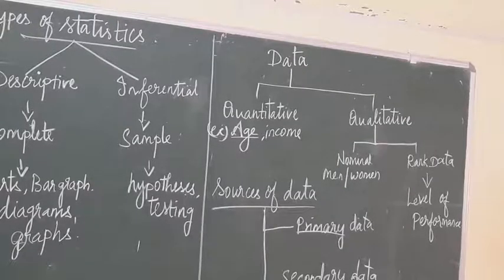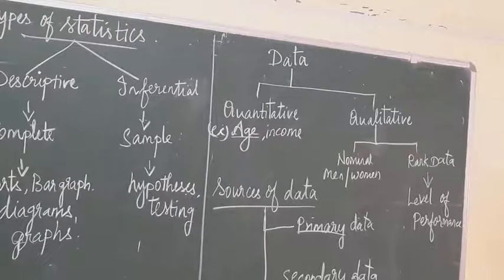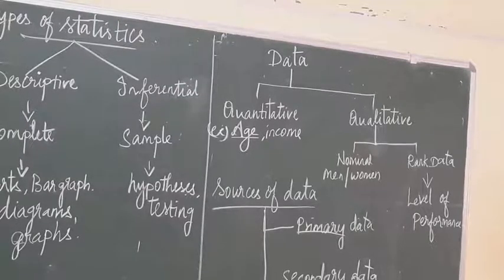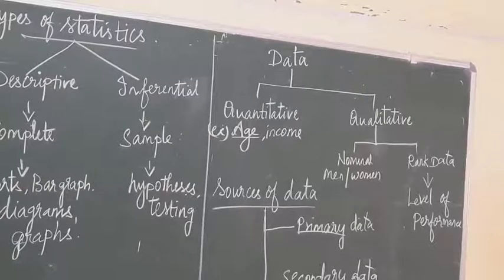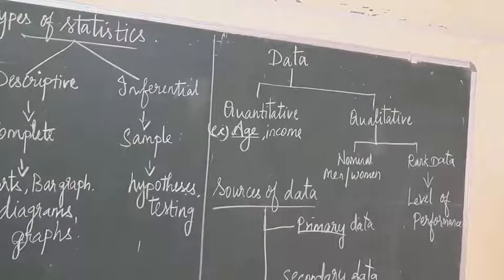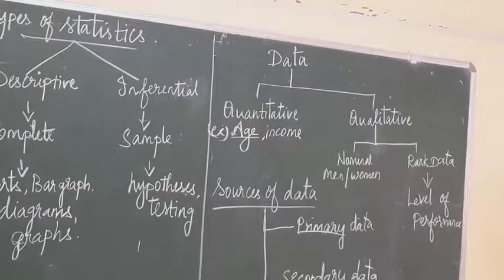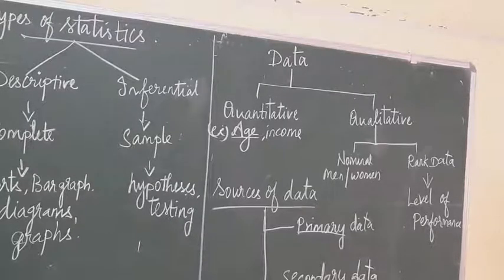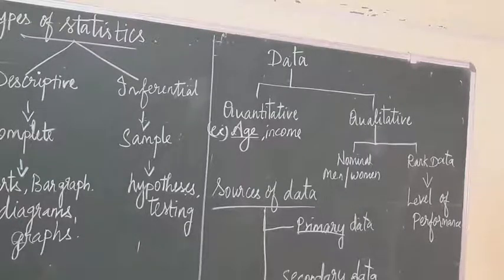Secondary data is already-existing data, published or unpublished — data that was previously collected and used by some other field or offices, and is now collected again for a different purpose. For example, if the education officer or CEO office asks for data about students, we already have it and submit it to them — that is secondary data. Data published through CSO, NSSO, and RBI are all called secondary data, because they already have the data and are just publishing it.